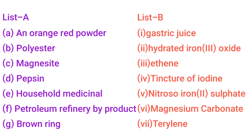Number 8 — Petroleum Refinery By-product. Number 3 — Ethyne. Number G — Brown Ring. Number 5 — Nitrosyl Iron Sulfate.